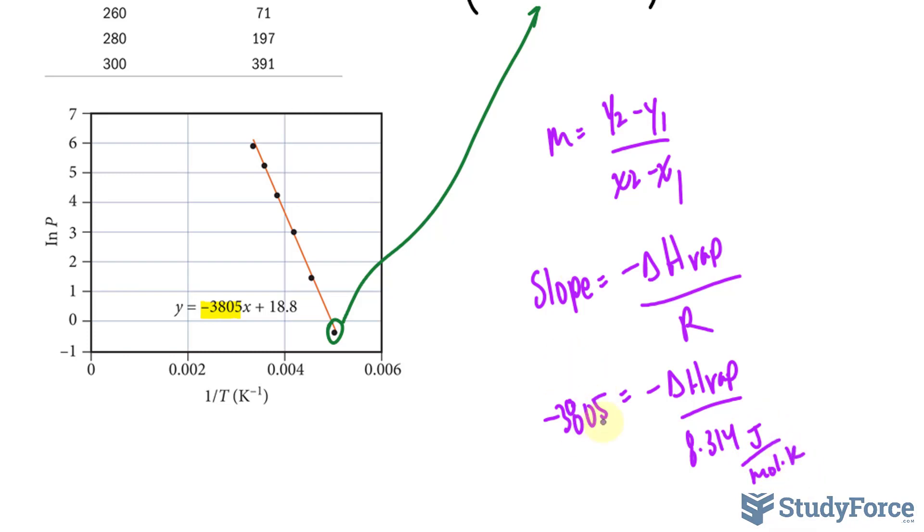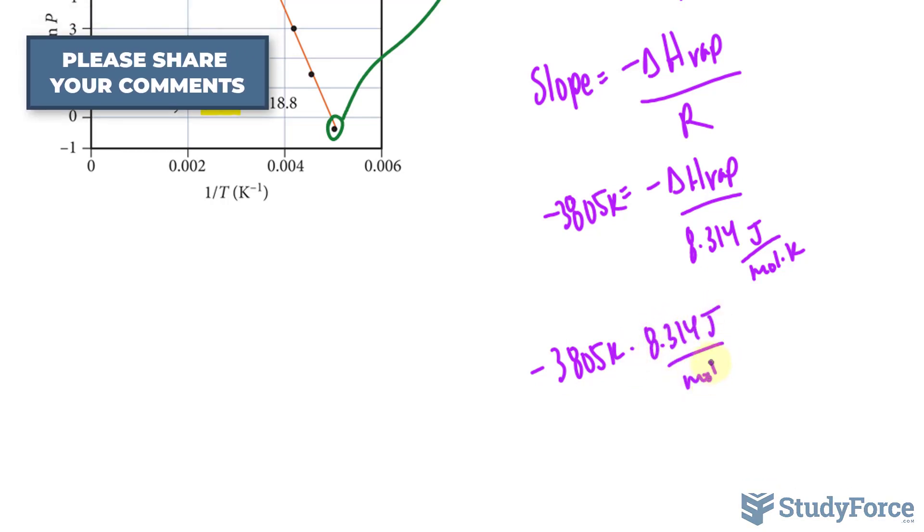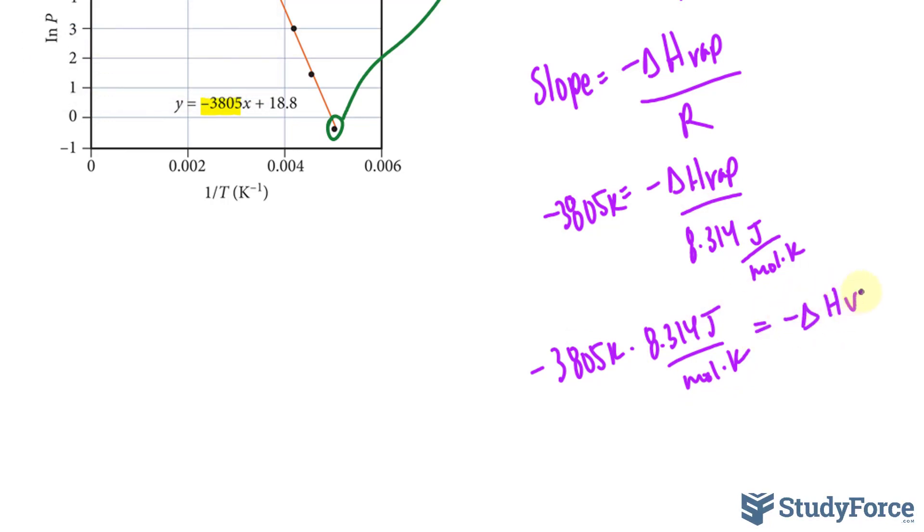And also the units for the slope is in Kelvin. So by multiplying both sides by this number, 8.314, the Kelvin units will cancel out. So negative 3805 Kelvin times 8.314 joules per mole times Kelvin. And remember that is equal to negative ΔHvap.